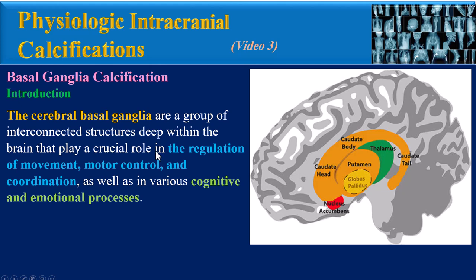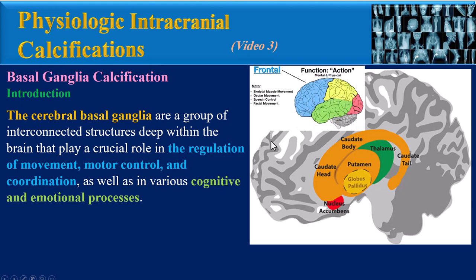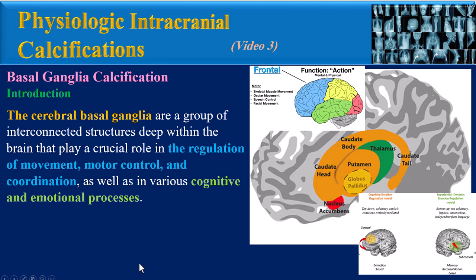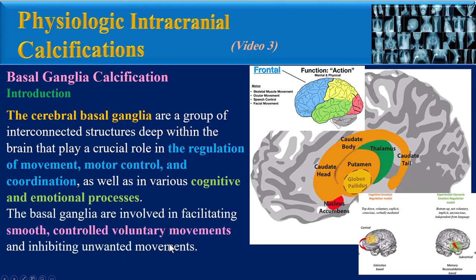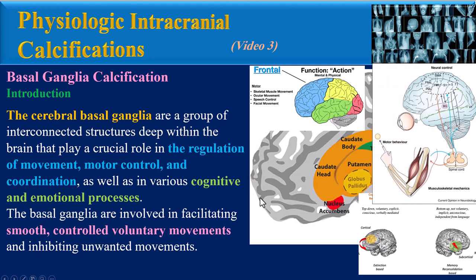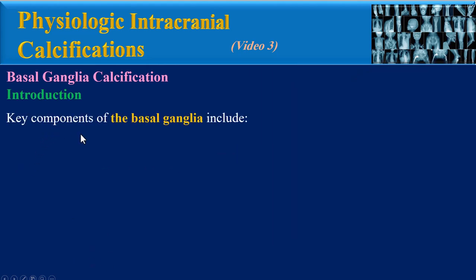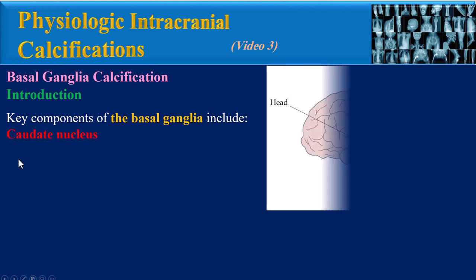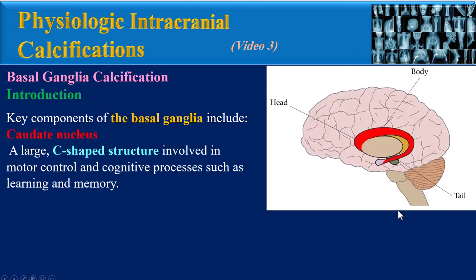The cerebral basal ganglia are a group of interconnected structures deep within the brain that play a crucial role in the regulation of movement, motor control, and coordination, as well as in various cognitive and emotional processes. The basal ganglia are involved in facilitating smooth, controlled voluntary movements and inhibiting unwanted movements. Key components of the basal ganglia include the caudate nucleus, which is a large C-shaped structure involved in motor control and cognitive processes such as learning and memory.